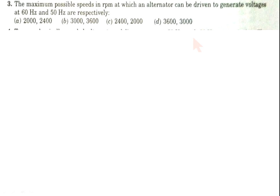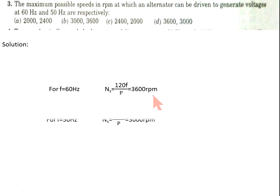Now come to question number 3: the maximum possible speed in rpm at which an alternator can be driven to generate voltage at 60 Hz and 50 Hz. For maximum speed, the number of poles should be minimum because speed is inversely proportional to poles. The minimum number of poles is 2. For a 60 Hz generator, speed should be 3,600 rpm, and for a 50 Hz generator, speed should be 3,000 rpm with P = 2. So option D is correct.